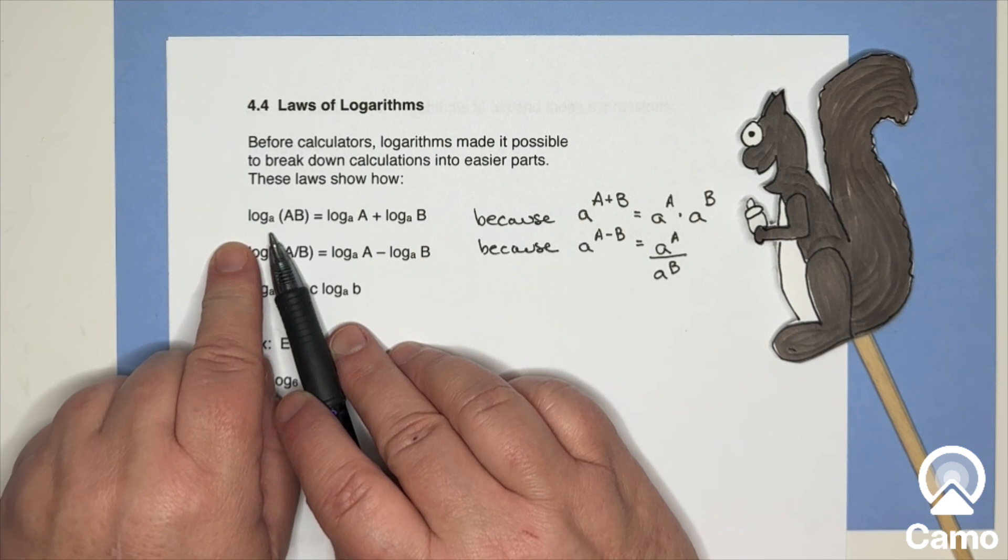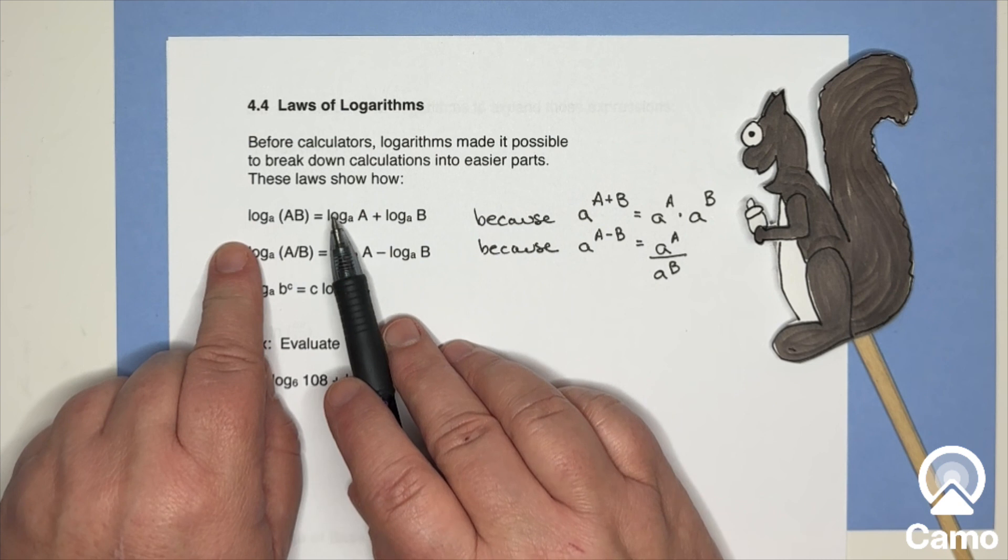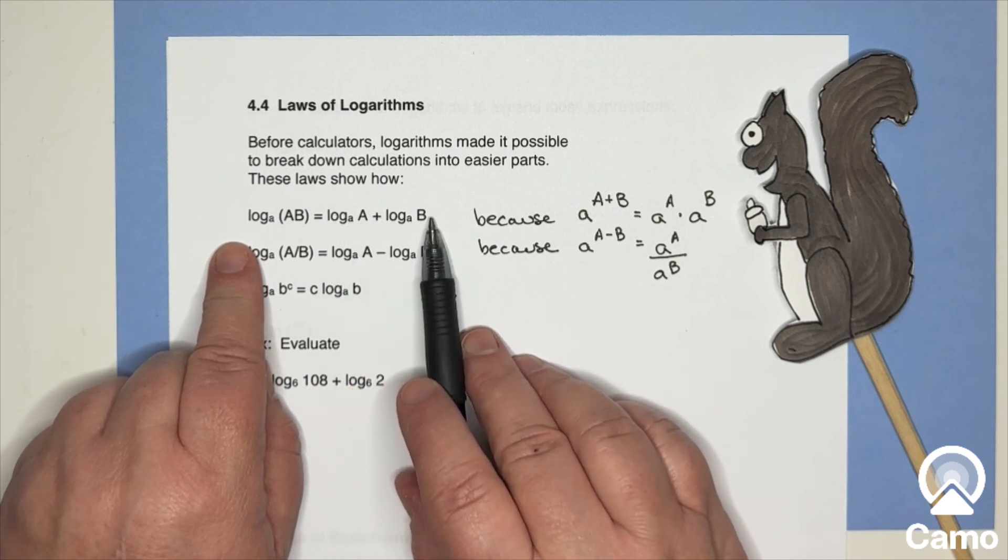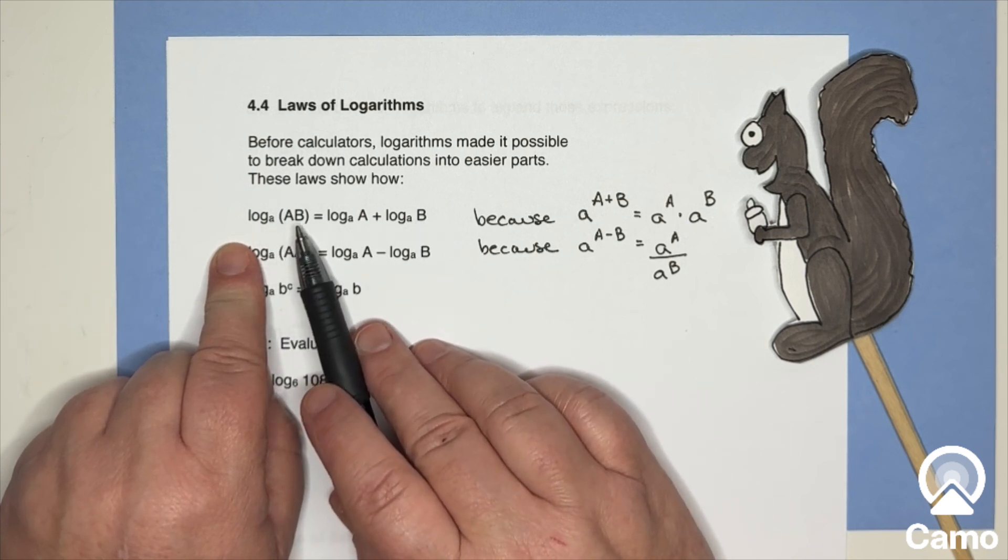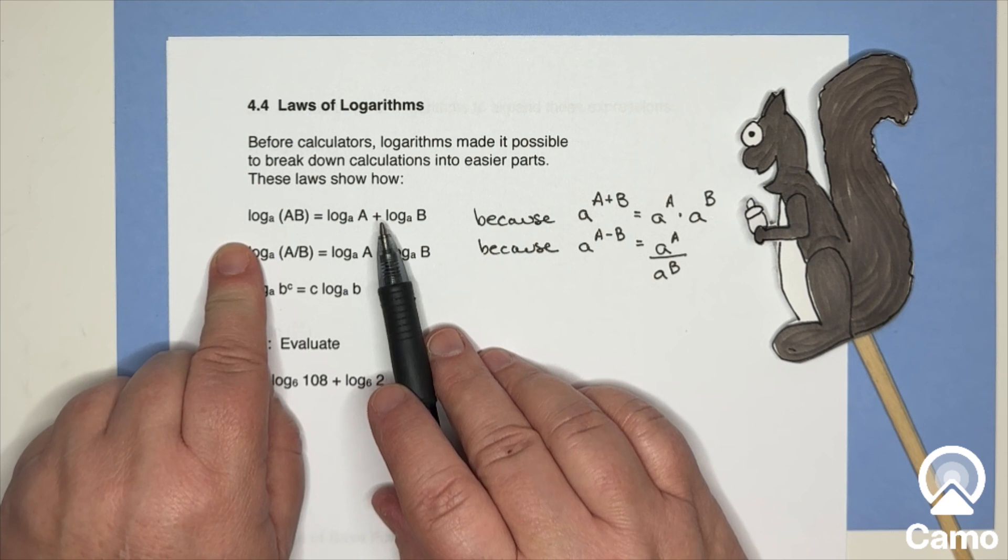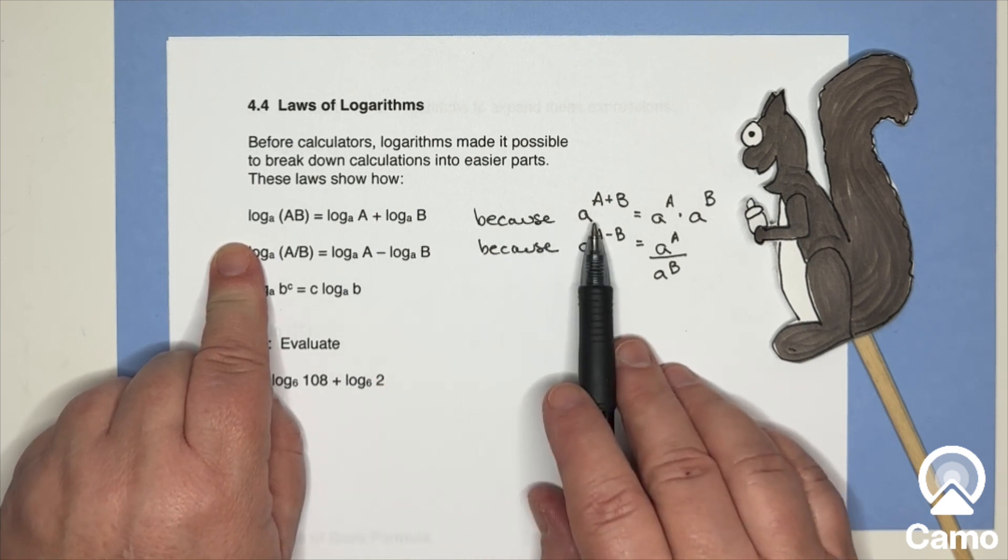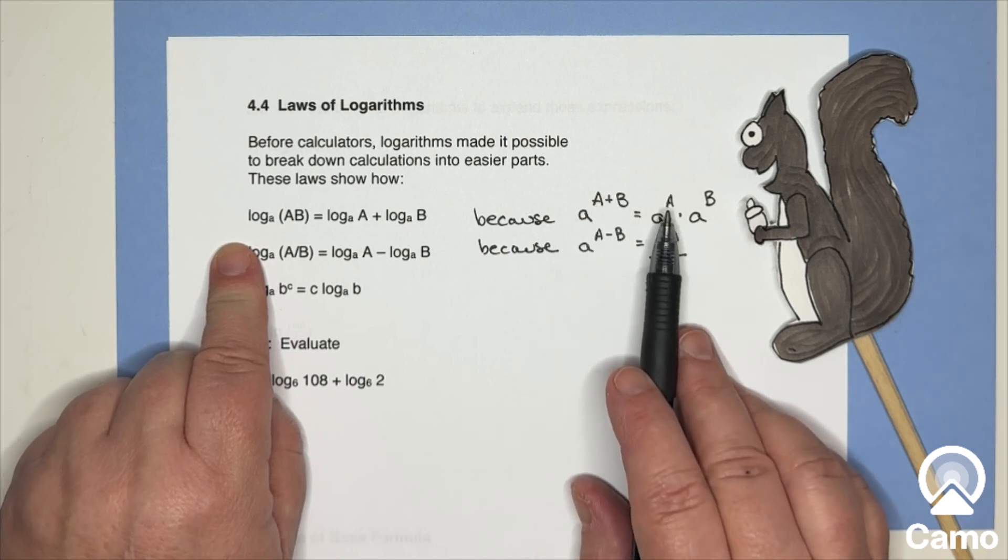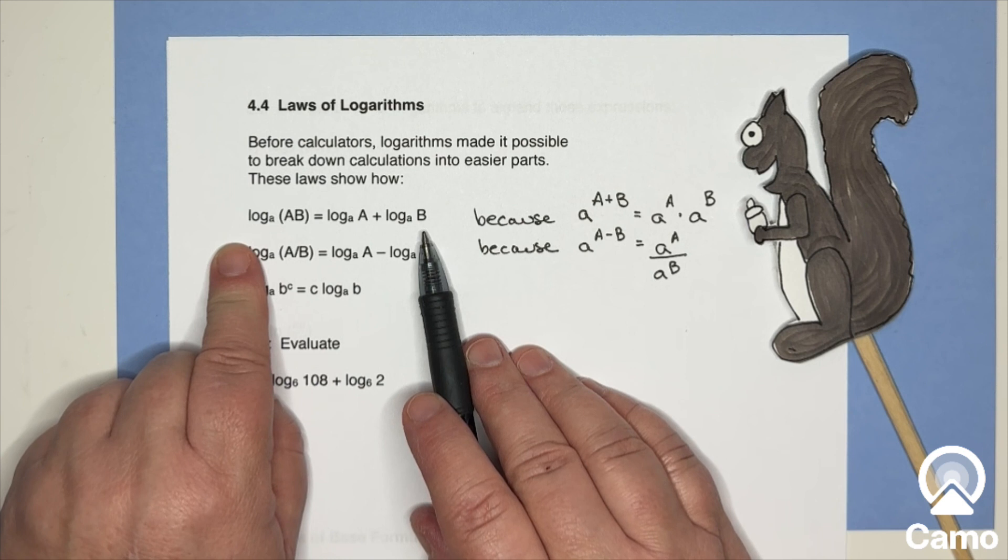So the three main laws of logarithms we're going to be focusing on are that if you take log base a of a product, A times B, then you get log base a of A plus log base a of B, which is surprising that the log of the product is the sum of those logs. But I'll remind you that when you have two exponents that are added together, what you really have are the bases multiplied together. And so that's where this rule comes from.